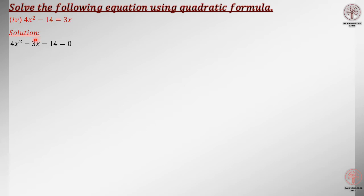As you know, the standard form of the quadratic equation is ax squared plus bx plus c is equal to 0. This is the first term, this is the second term — that is why we are going to write it here in the second place — and this is the last term, or c. Now we have to compare this equation with this standard form.